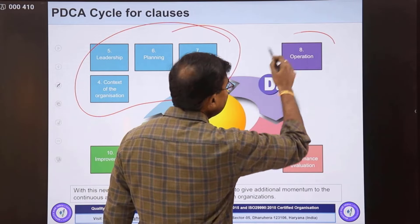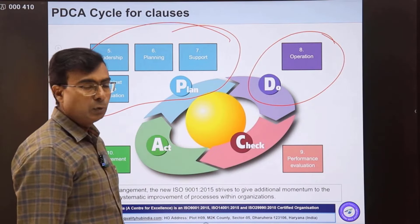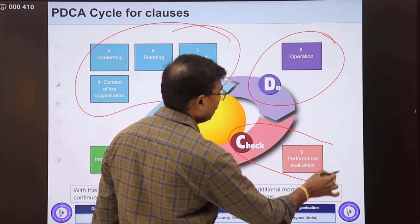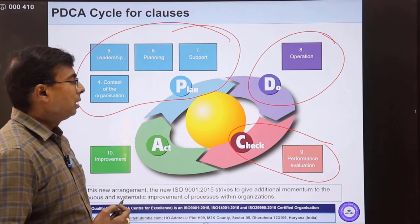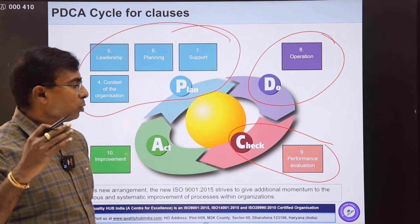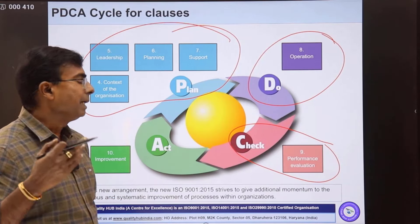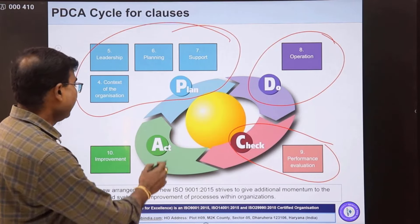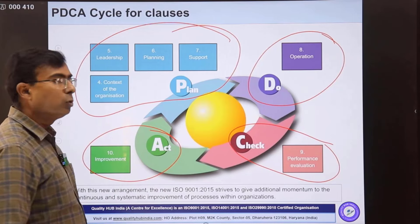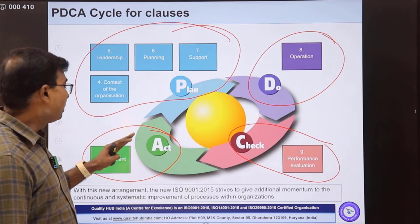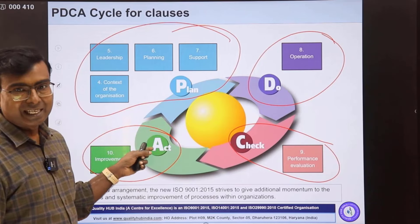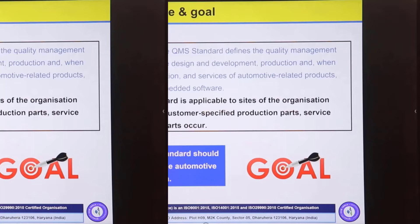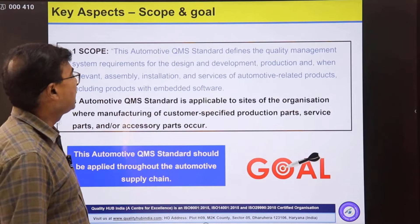Clauses four, five, six, and seven are part of the planning phase. Clause eight is the Do phase — that is execution — and that is the biggest clause. Clause nine is all about performance evaluation, covering process audits, product audits, and internal audits as part of the Check phase. Finally, clause ten is improvement — continual improvement — as part of the Act phase. This PDCA cycle was developed by Dr. Edward Deming.